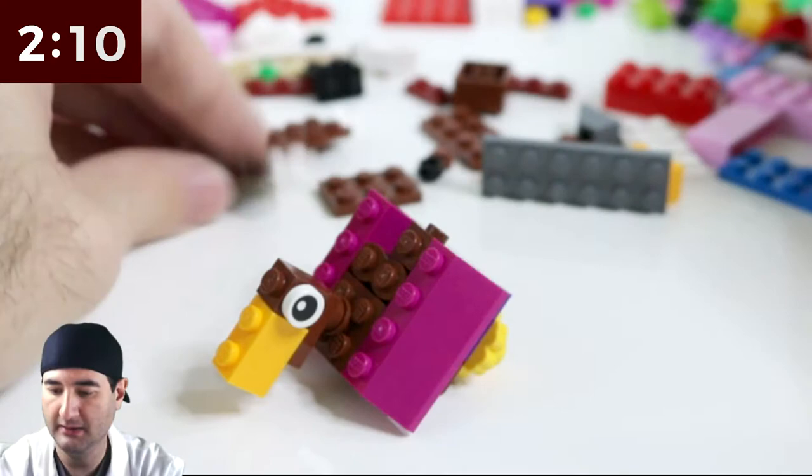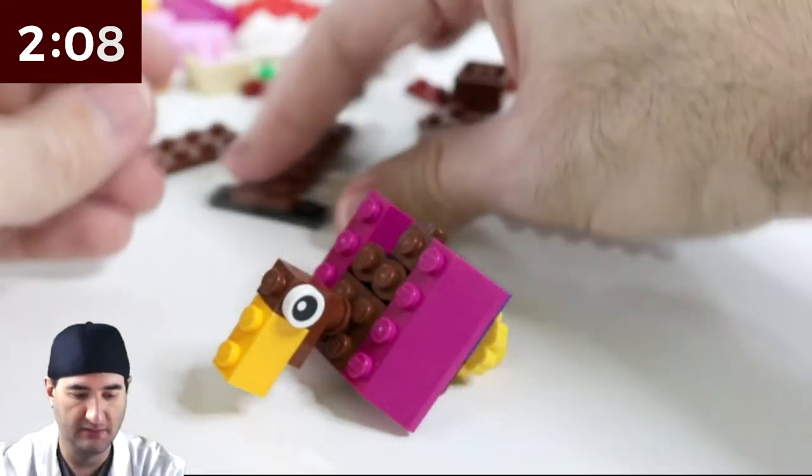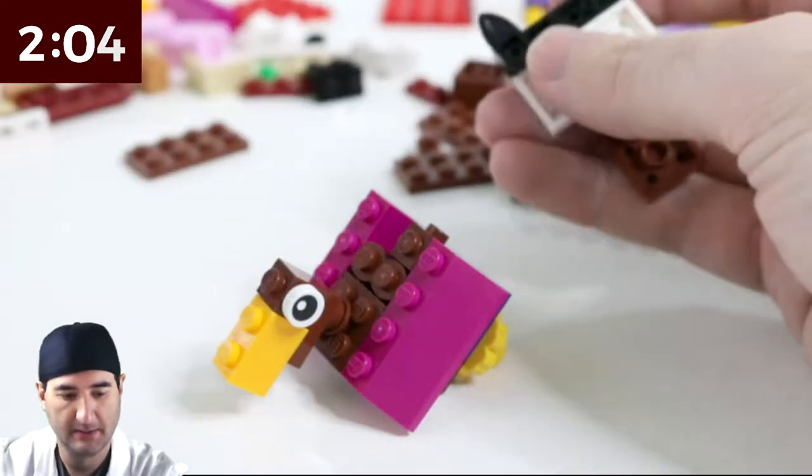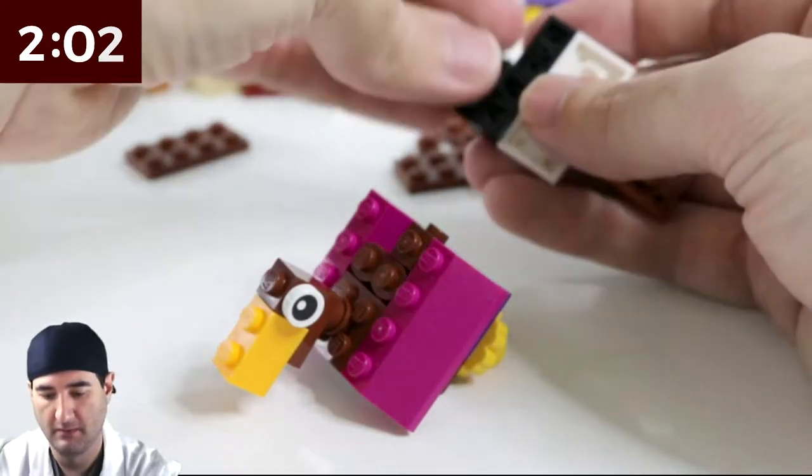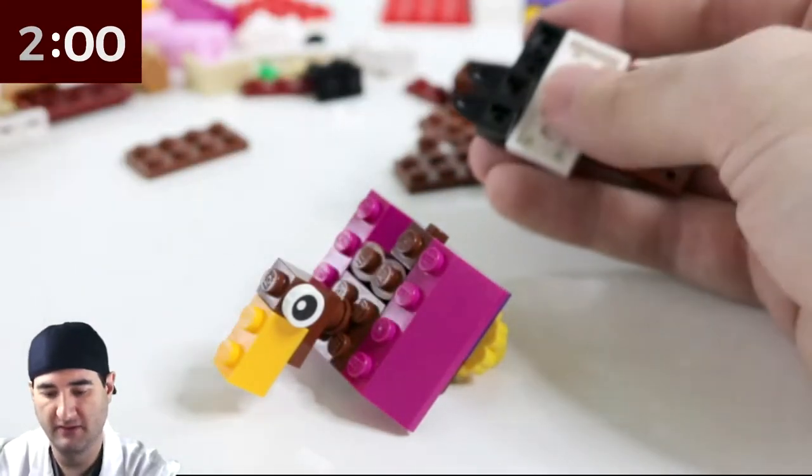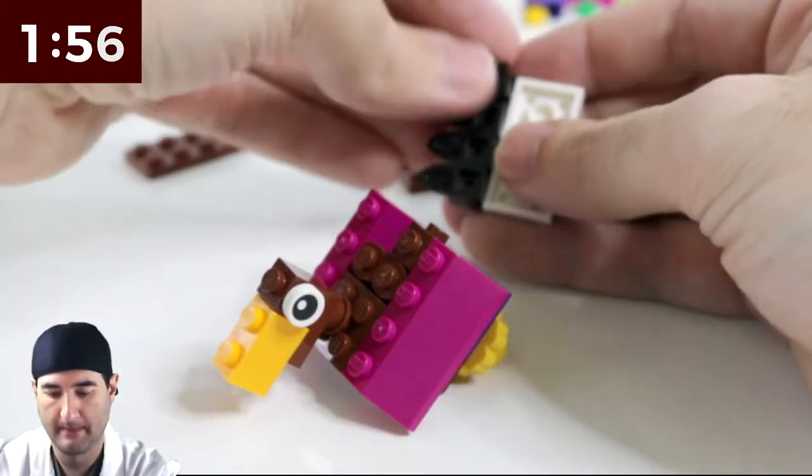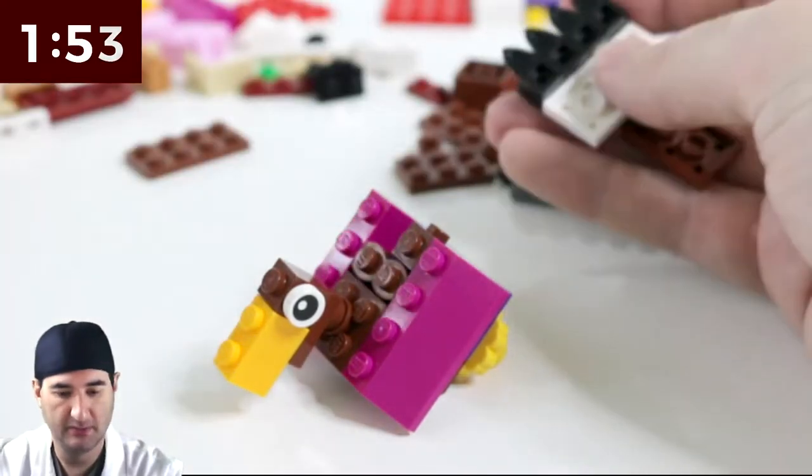Or maybe, can I integrate these little things here? Right? Maybe I can integrate these. So they look like feathers, right? And then maybe I need to build this up.